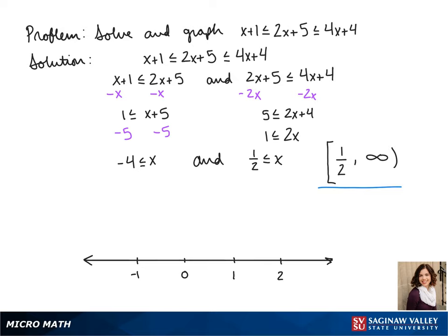So to graph this, it would just be anything greater than 1 half. So we draw our closed circle on 1 half, and our arrow would go to the right.